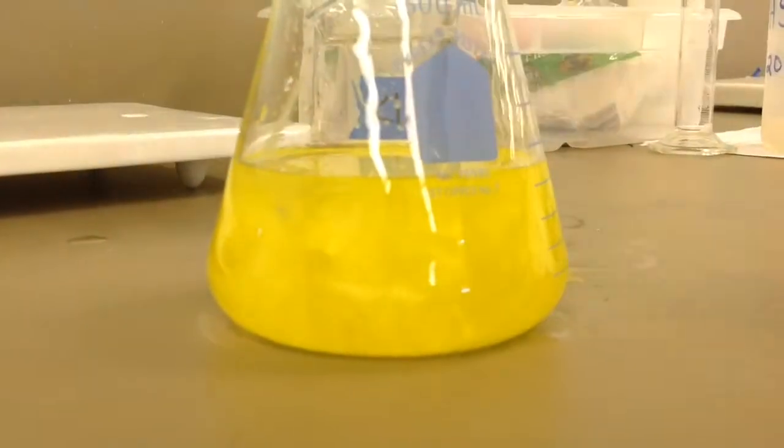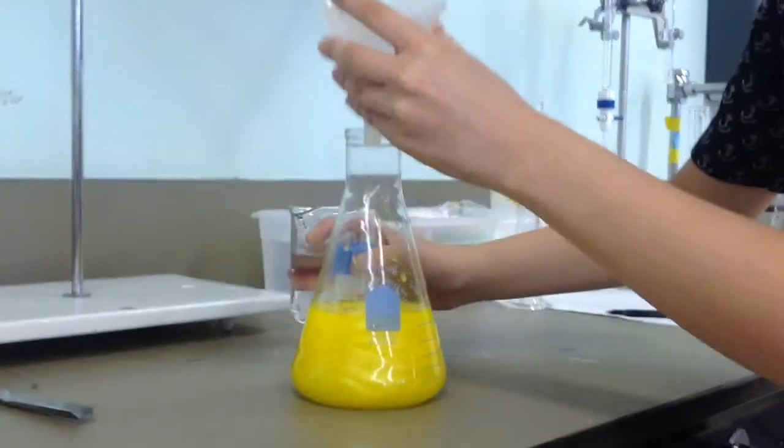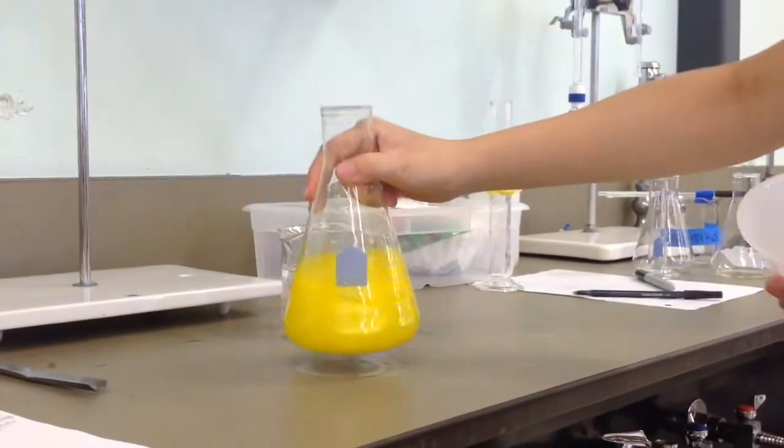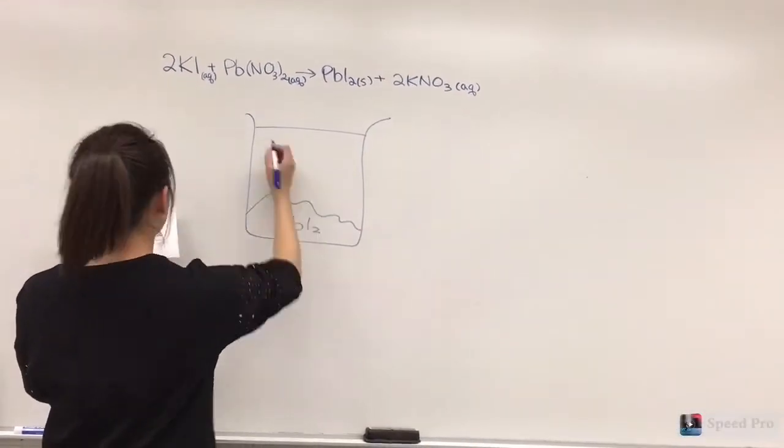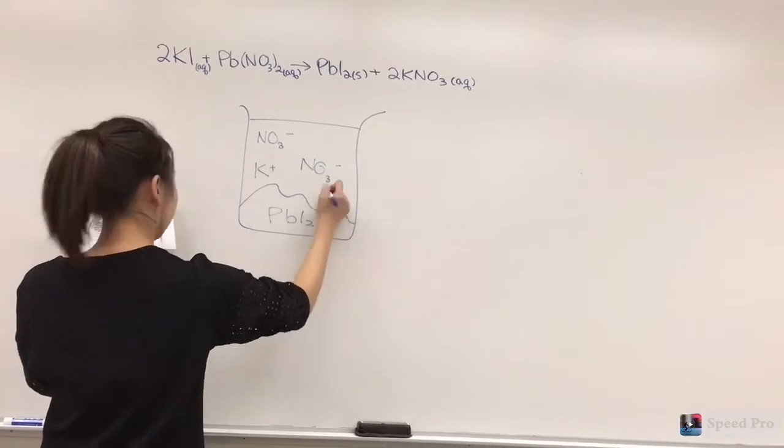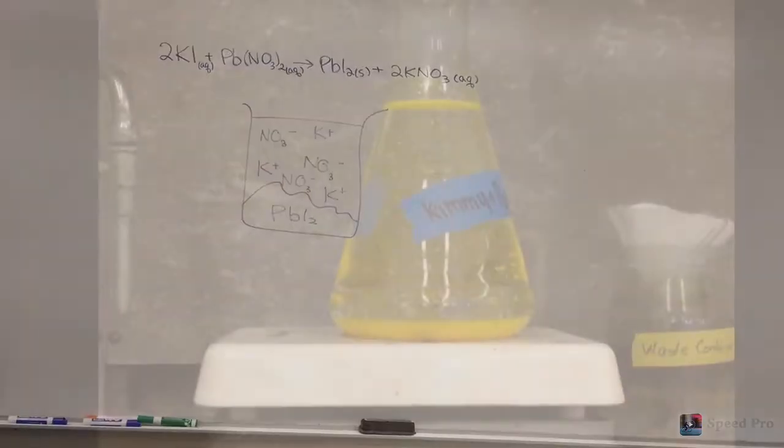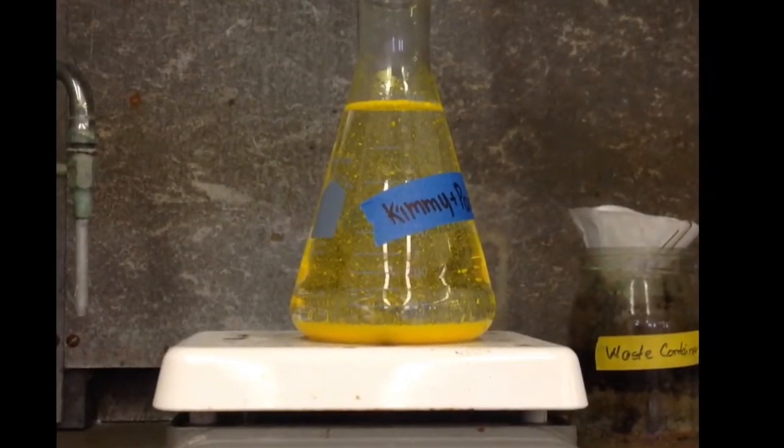When the two aqueous solutions were combined, potassium iodide being added to the lead-2 nitrate in order to minimize chances of coming into contact with the lead, a silky yellow solid was produced. This solid was small crystals of lead iodide that dissolved when the full 500 milliliter solution was heated.